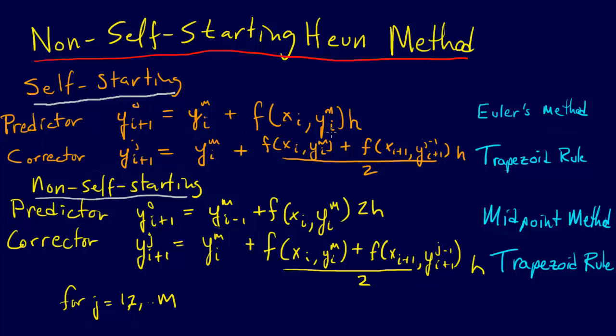That's Euler's method that predicts our y_i+1 value, but then we use that y_i+1 value and we stick it in here and we compute our f x_i+1, y_i+1. We use this trapezoid rule and we compute that and that's our corrector. And if we iterate through here, then we have an implicit method.